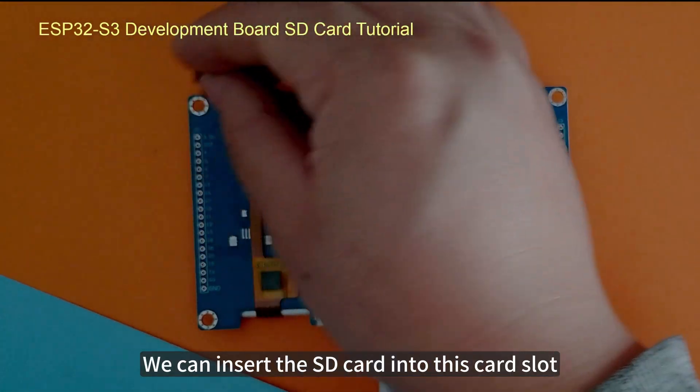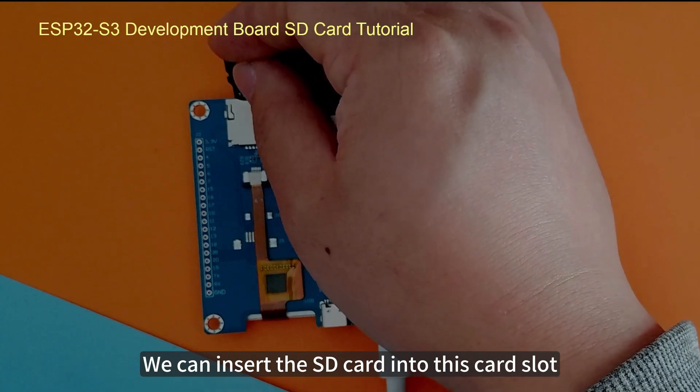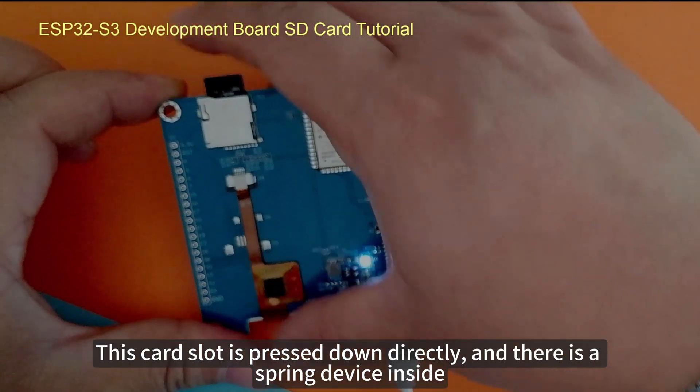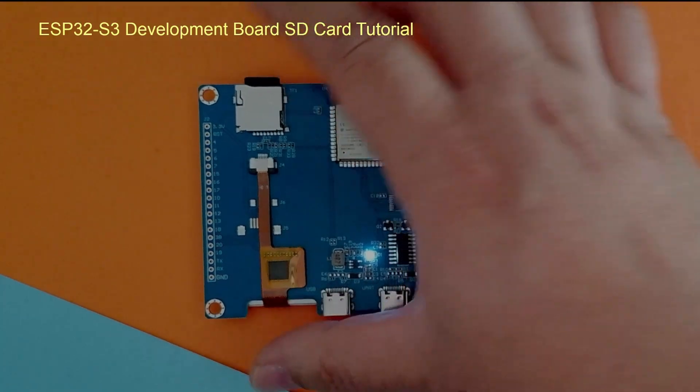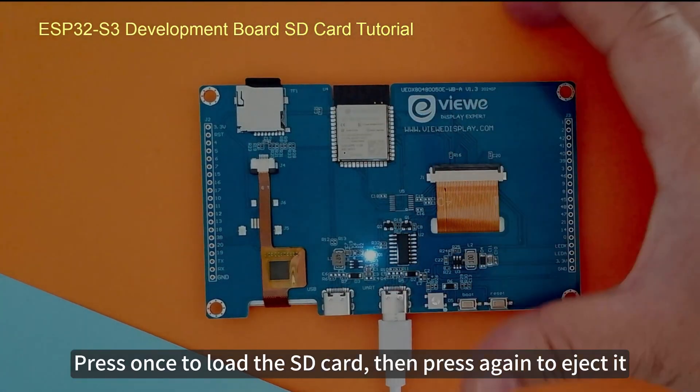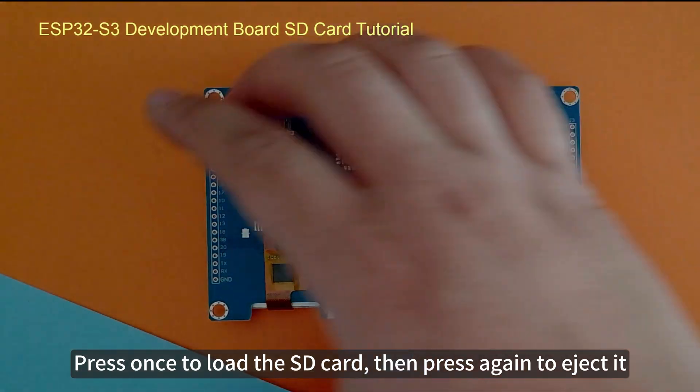We can insert the SD card into this card slot. This card slot is pressed down directly and there is a spring device inside. Press once to load the SD card, then press again to eject it.